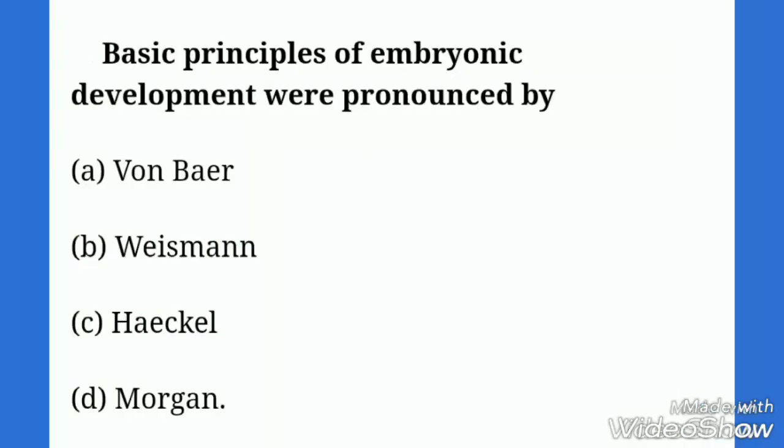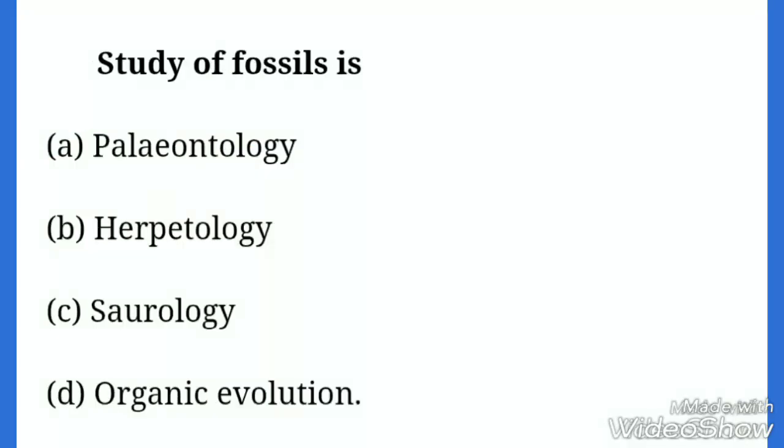Next is: basic principles of embryonic development were pronounced by? Here the correct option is Von Baer. Von Baer put forward the best law and it was later called the biogenetic law by Ernst Haeckel in 1866.